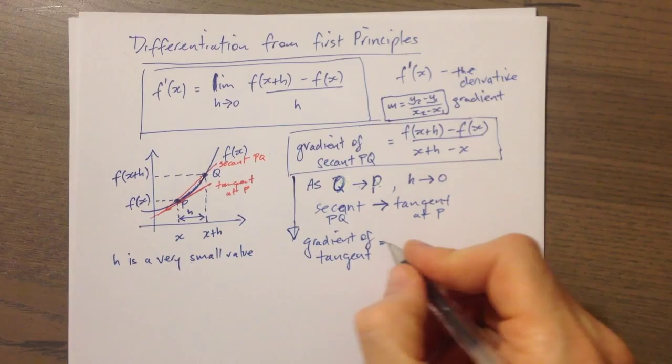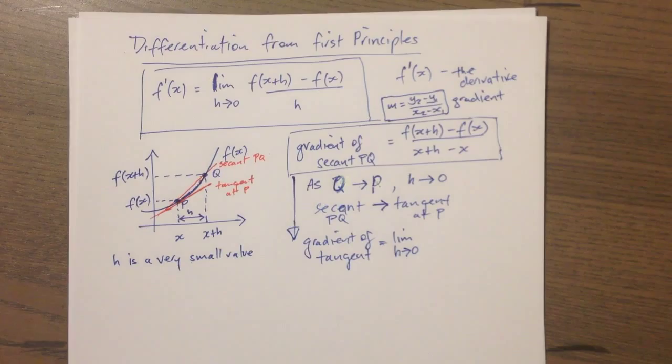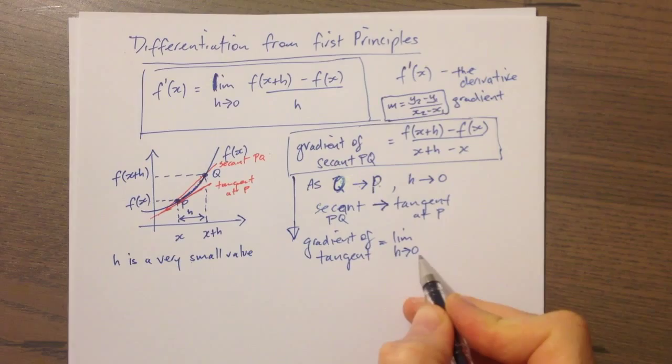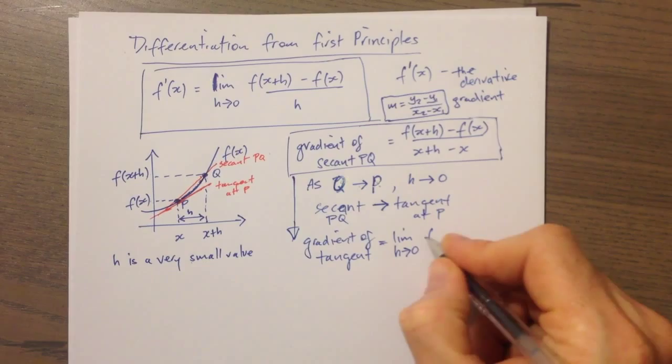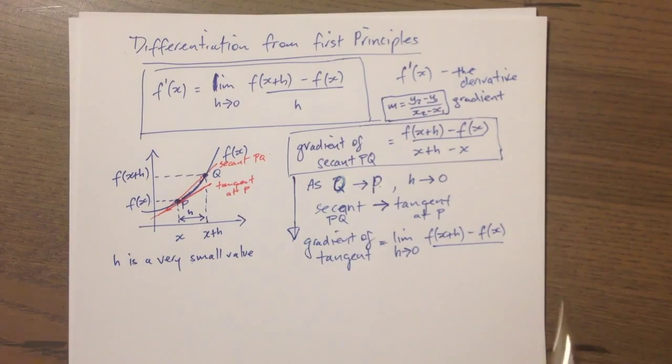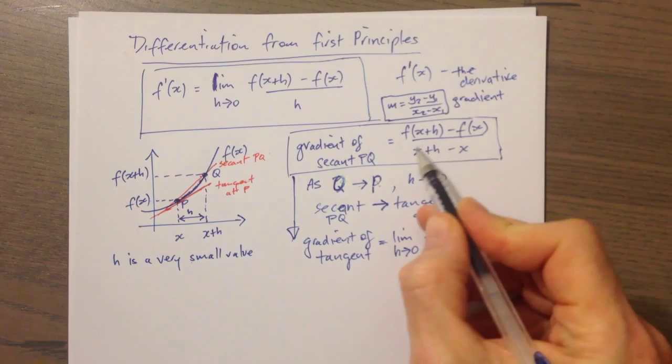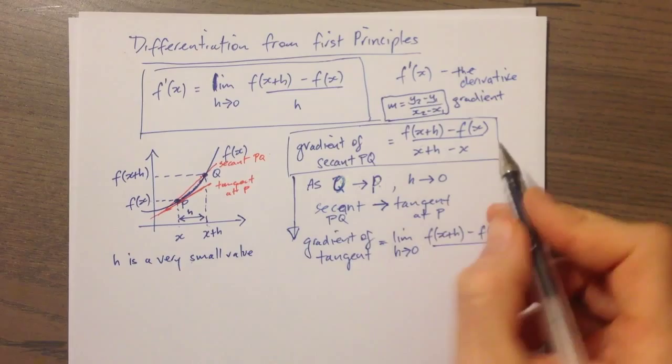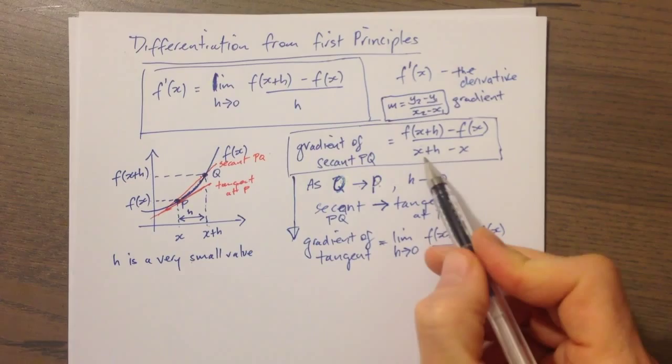With the formula for the gradient of the secant, what we can say is that it just becomes the gradient of the tangent. We need to put in this extra qualification that the limit of h must approach zero. So the gradient of the tangent equals the limit as h approaches zero of the gradient of the secant: f of x plus h minus f of x. Note also that the denominator — x2 minus x1, which is x plus h minus x — simplifies to just h, because the two x's cancel out.